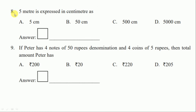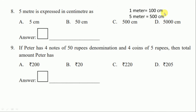Question number eight: five meters expressed in centimeters. One meter is equal to one hundred centimeters, so five meters is equal to five hundred centimeters. Our correct option is option C, five hundred centimeters.